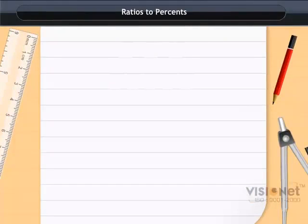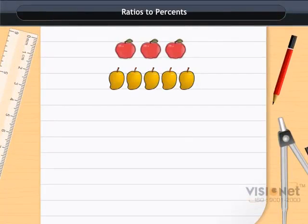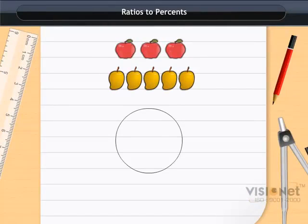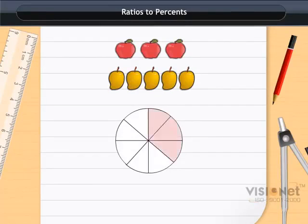Ratios to percents. Neha has 3 apples and 5 mangoes. She wants to find the percentage of apples she has. The ratio of apples to mangoes is 3 to 5.